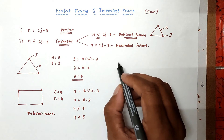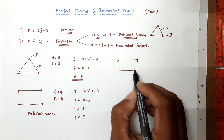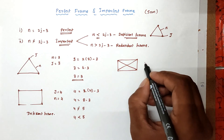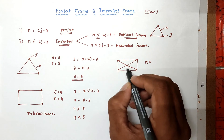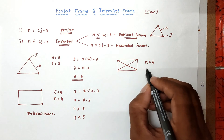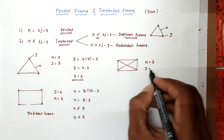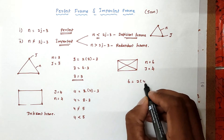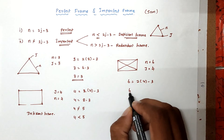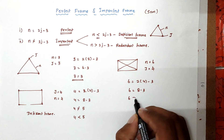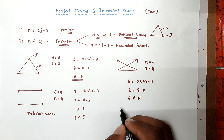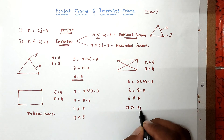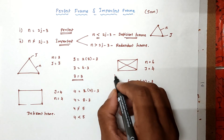Now consider another frame. Here the members are 1, 2, 3, 4, 5, 6 — so there are six members. And there are four joints, so j equals 4. Substituting: 6 = 2 into 4 minus 3 = 8 minus 3 = 5. So 6 is not equal to 5. Since n is greater than 2j minus 3, this frame is called a redundant frame.